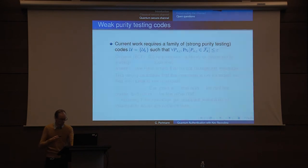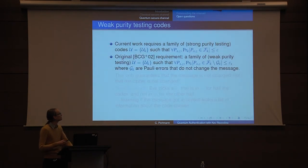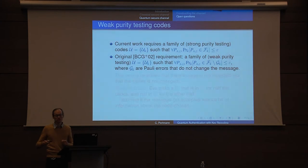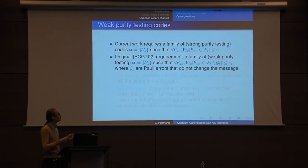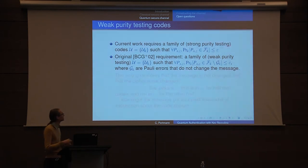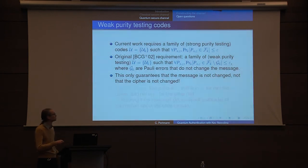The last comment: we only proved security for a subset of their protocols — here's the difference. We require that Pauli errors are all caught except with error ε. The original protocol has a slightly weaker requirement. In quantum codes — unlike classical codes — there exist errors which are not caught but do not change the message: basically errors that do phase flips on the syndrome. The original paper required that errors which are not caught and do not change the message are small. This makes sense because the goal was that the message doesn't get changed — if an error doesn't change the message, it's okay.